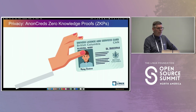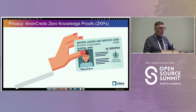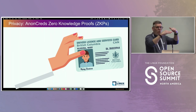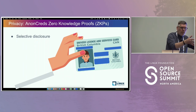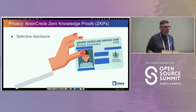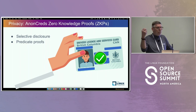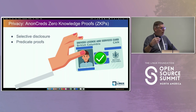AnonCreds is a flavor of verifiable credentials. It contains a couple of features beyond the generic W3C standard. Those things are: selective disclosure — when you present a credential, you can only show some of it, selectively disclosing which attributes you want to show. And a thing called predicate proofs — all of this is based on zero knowledge proofs. The most obvious use is proving that you are older than a certain age, like older than 19, based on the date of birth in the credential without exposing the date of birth.